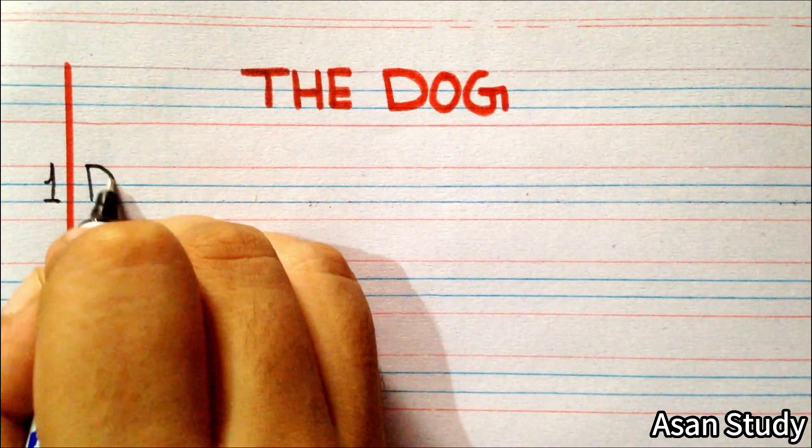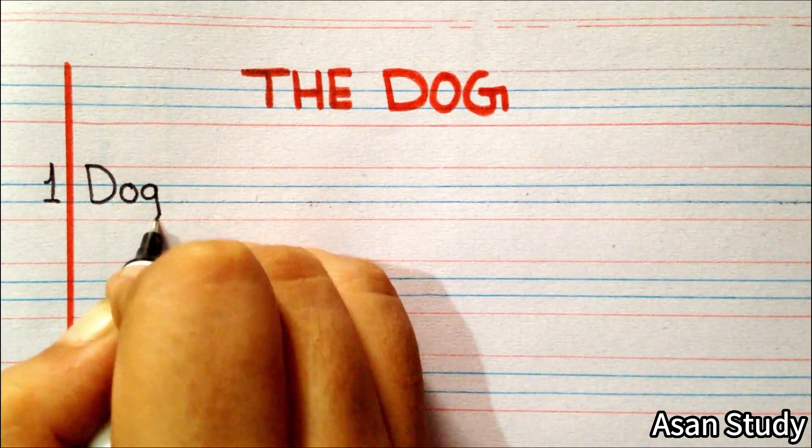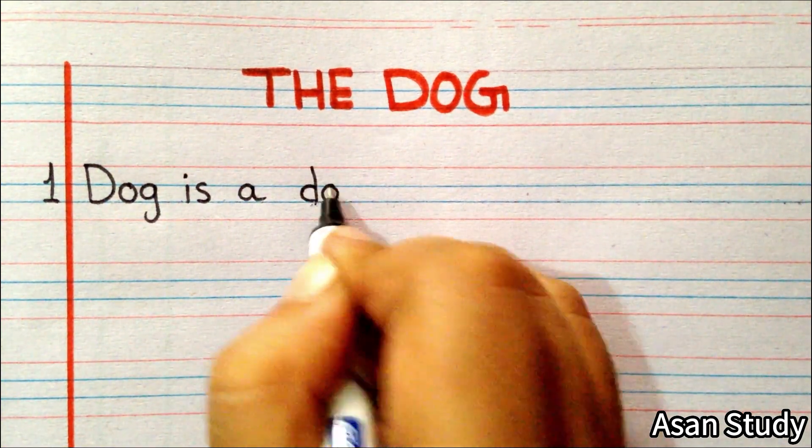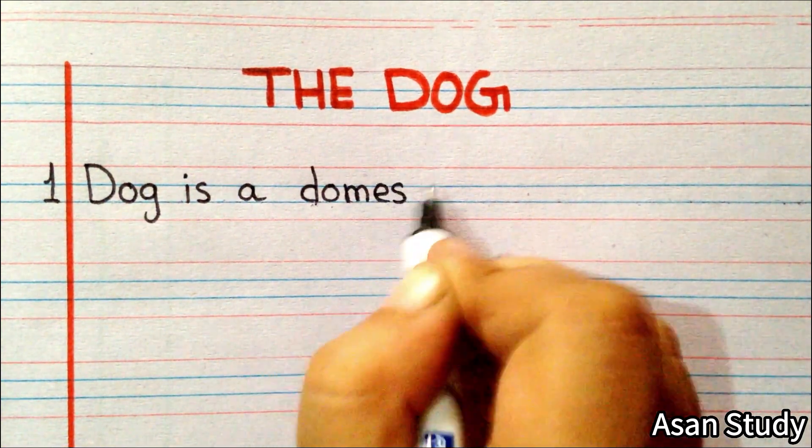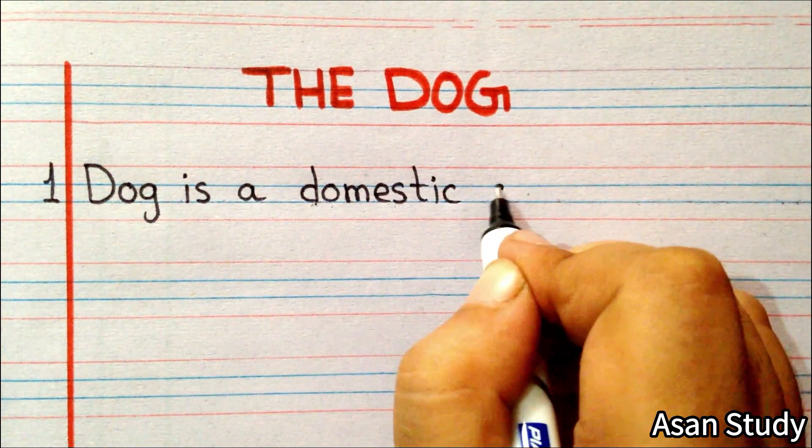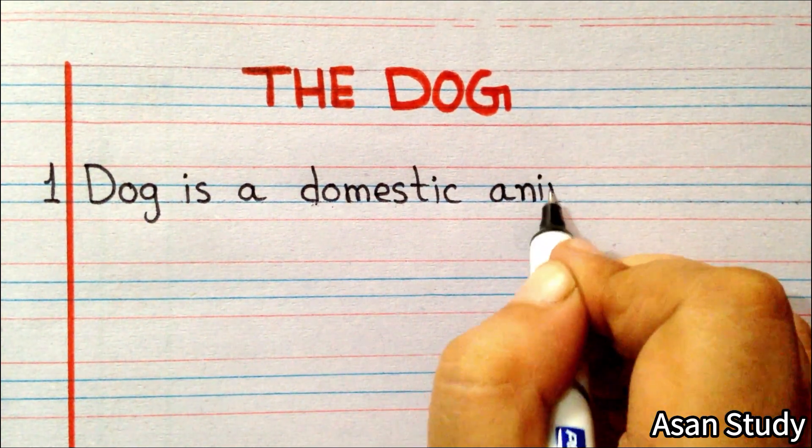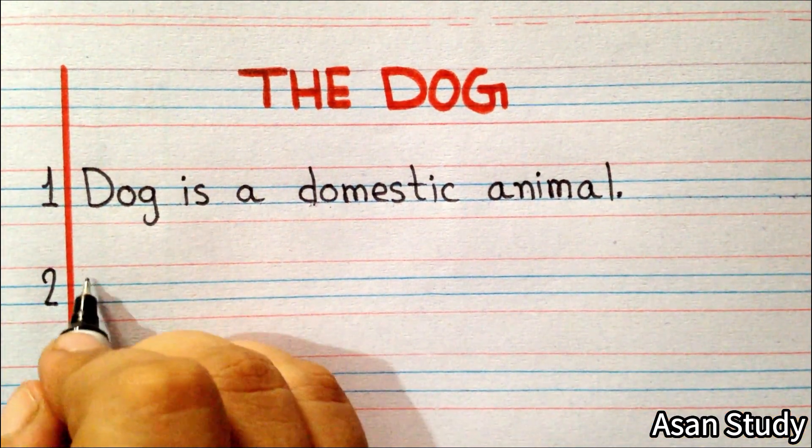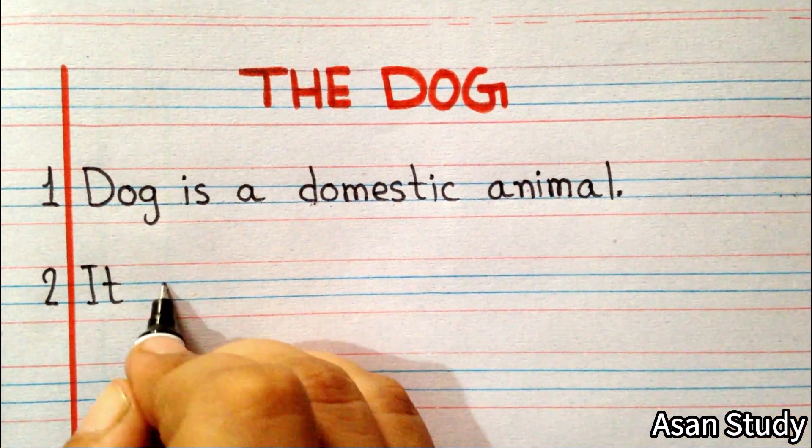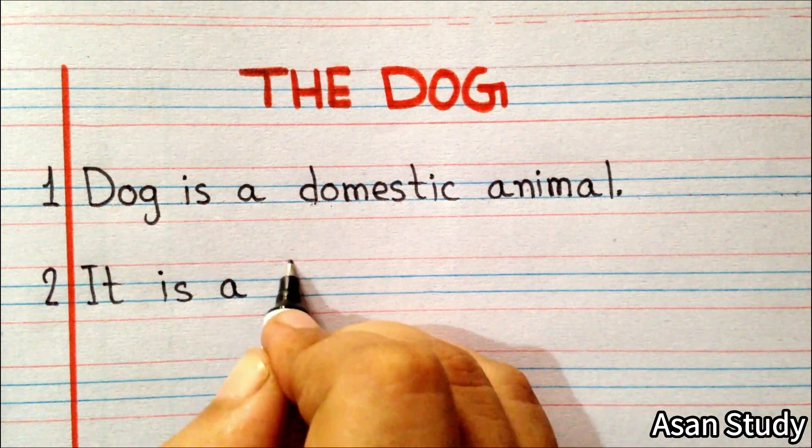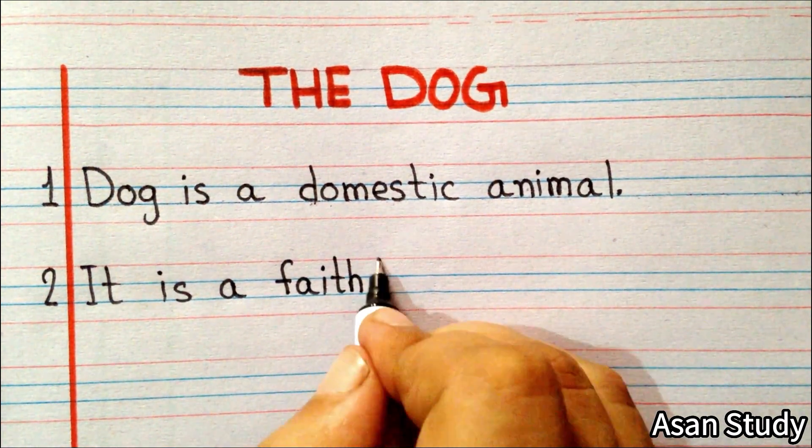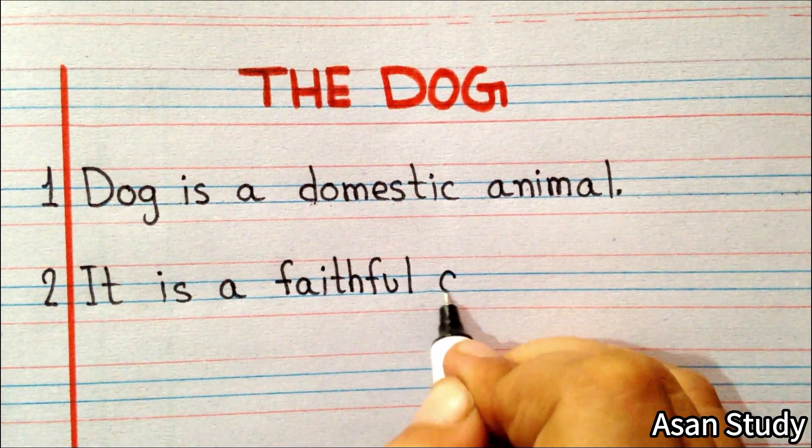Point number 1: Dog is a domestic animal. Point number 2: It is a faithful animal.